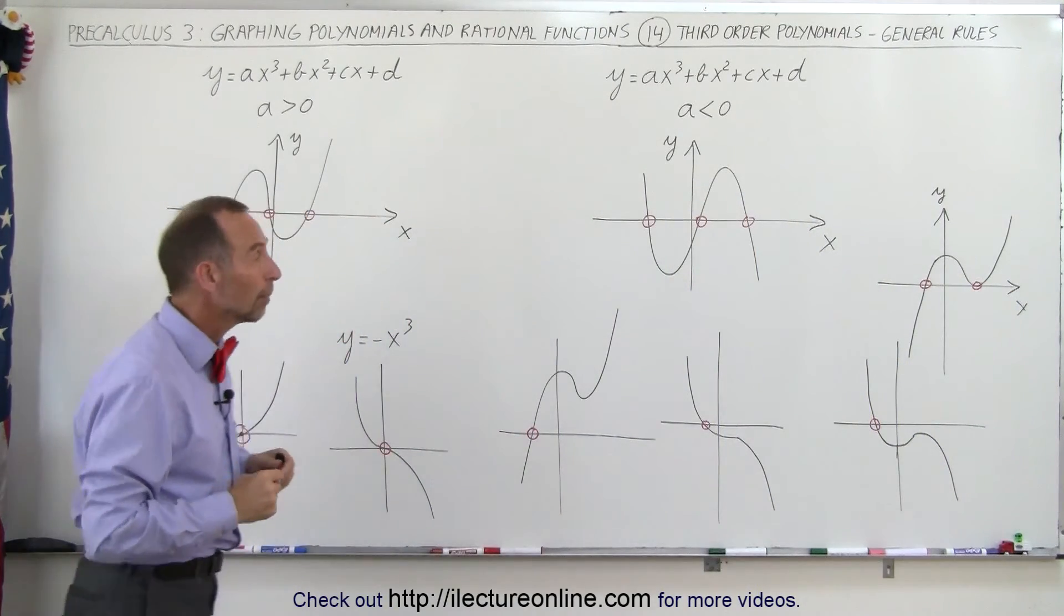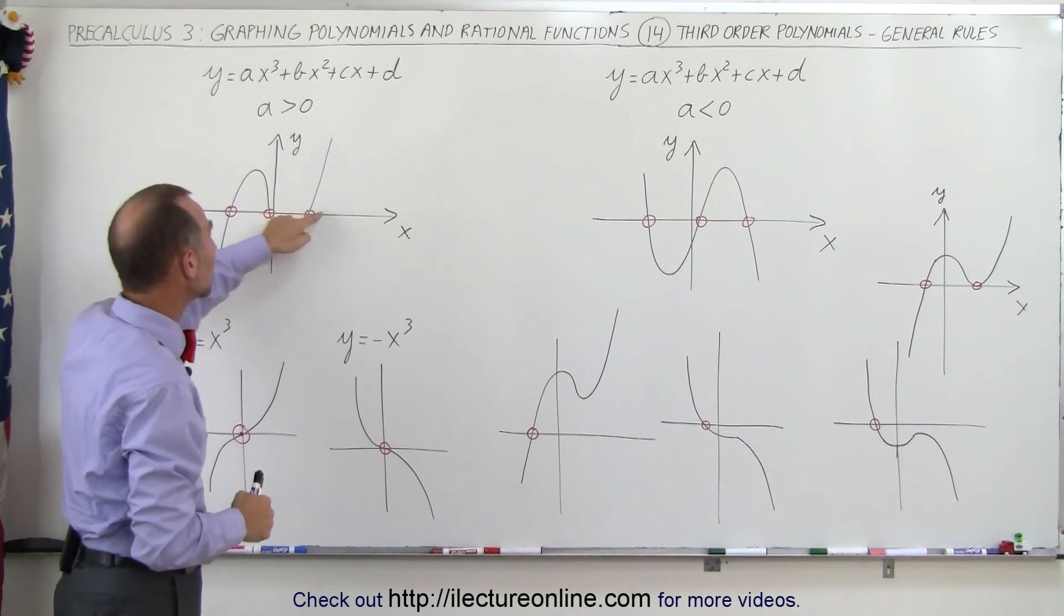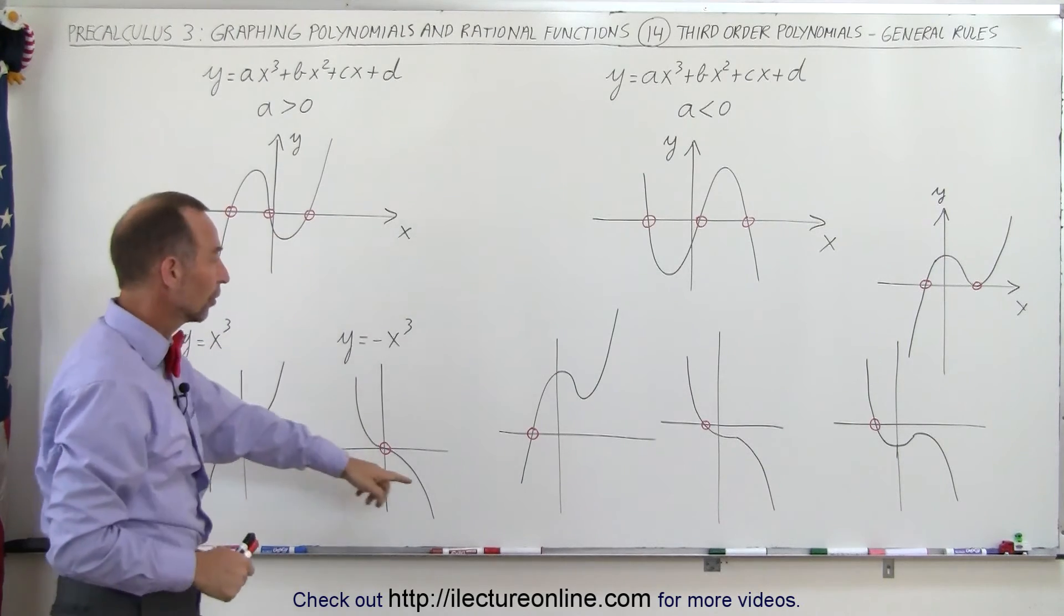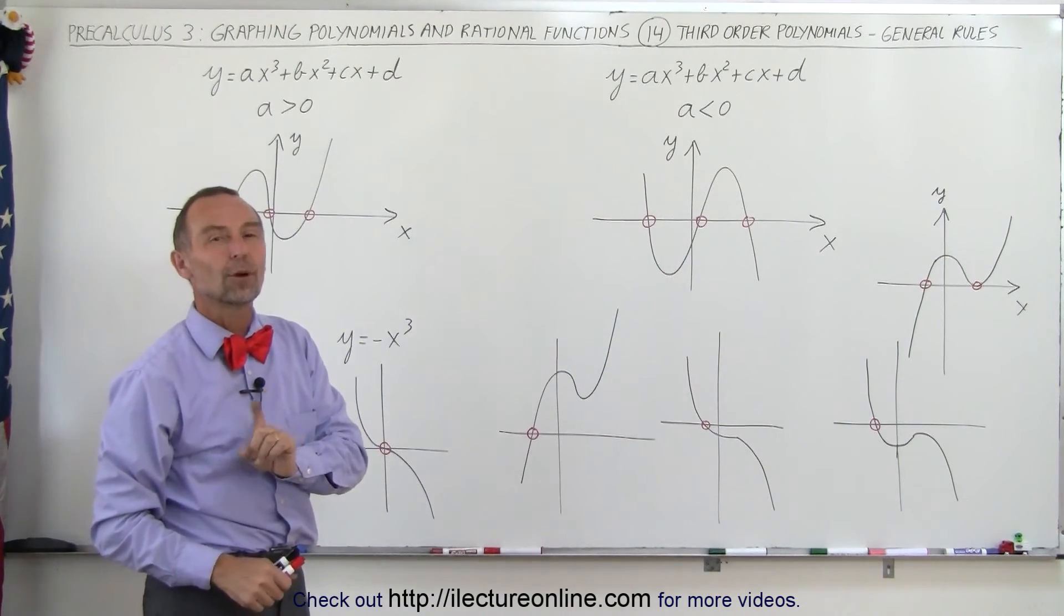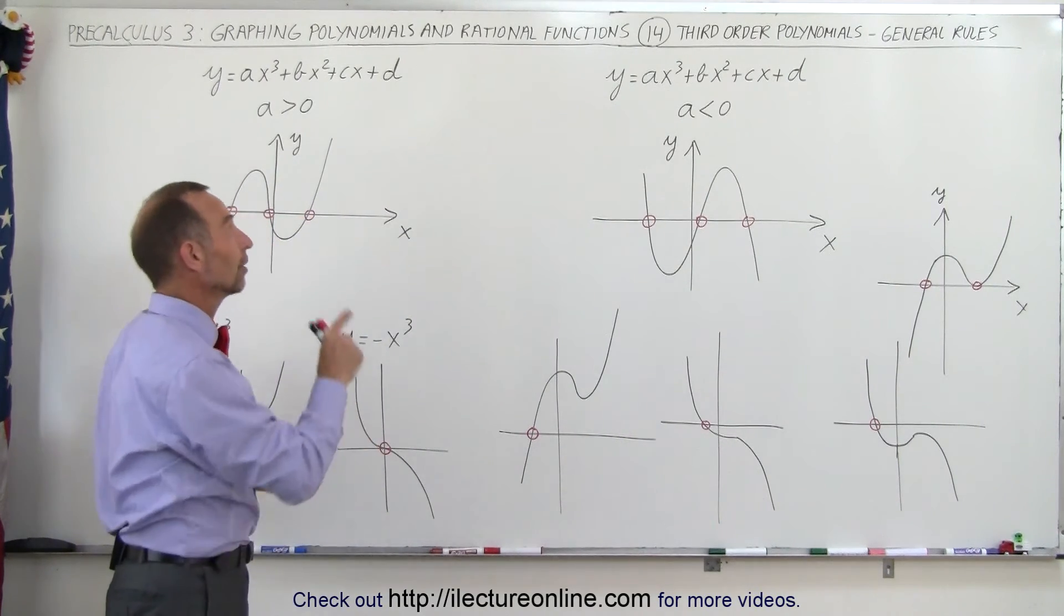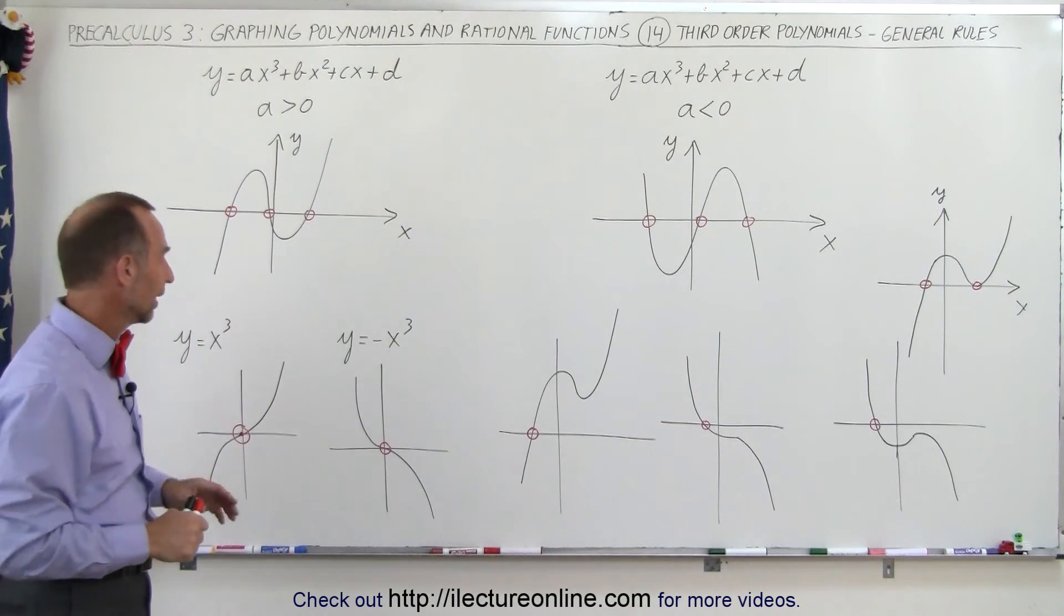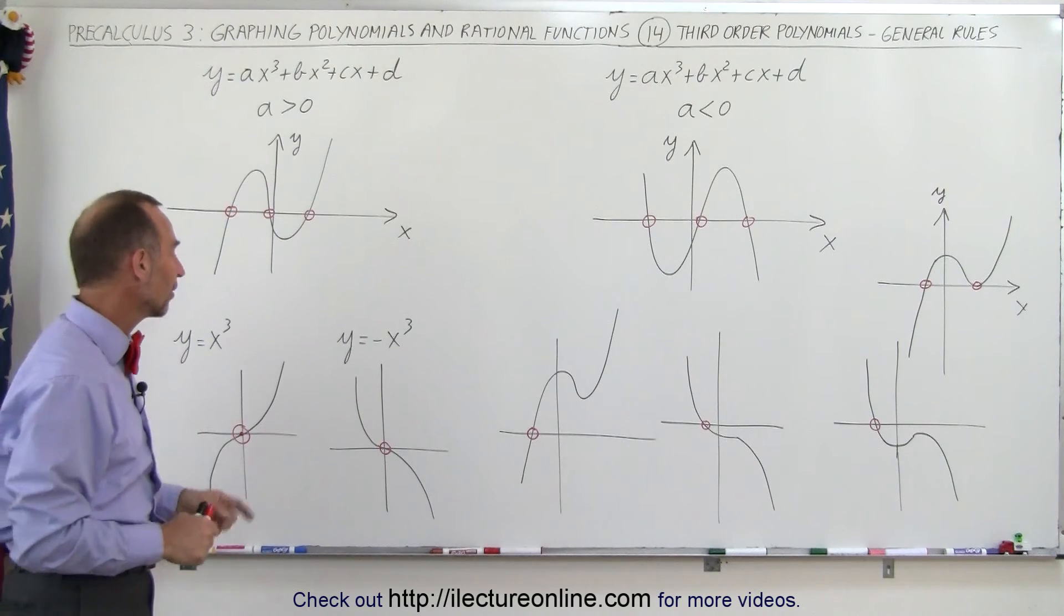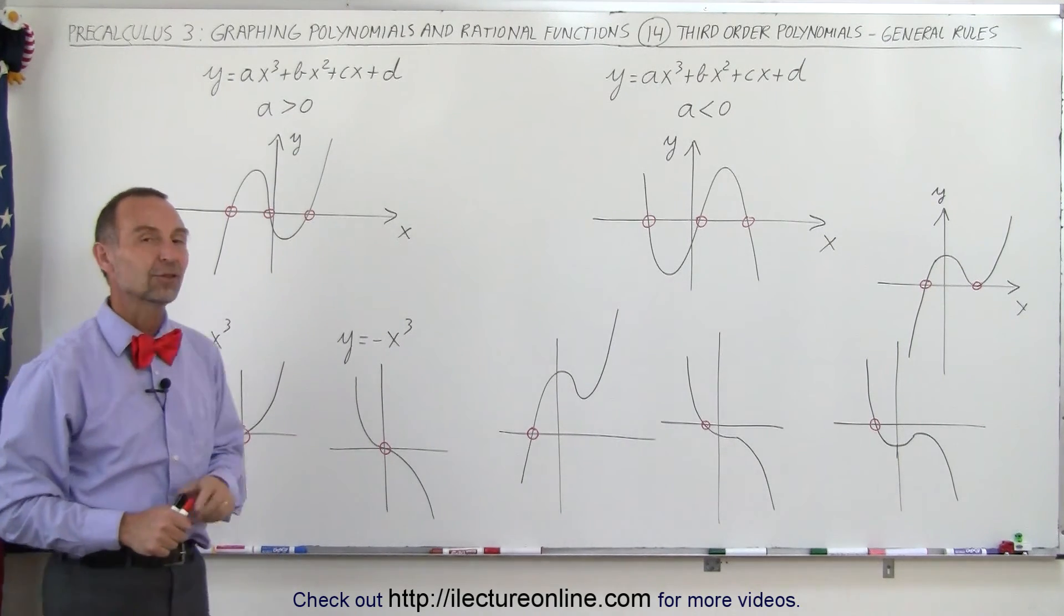So the possibility is when you have a polynomial of third order, that you have three roots, one root, two roots, you can have a situation where there's zero roots. In this case you can. Parabolas can have zero roots, but third order polynomials have to have at least one root, and you can see that there's no other possibility. Even if you just have this one term right here, you have at least one root.